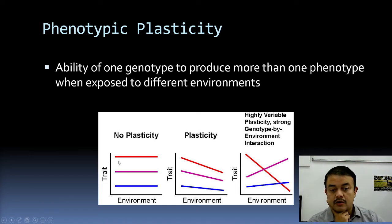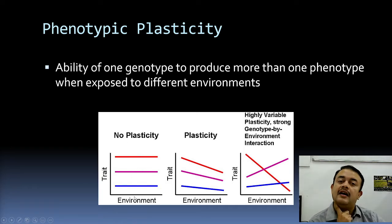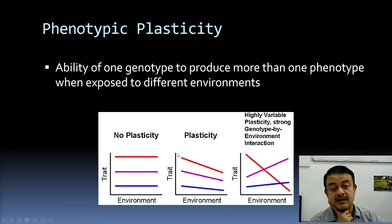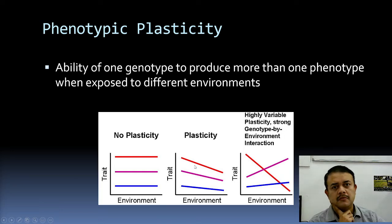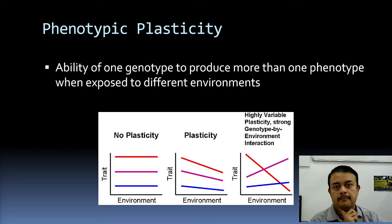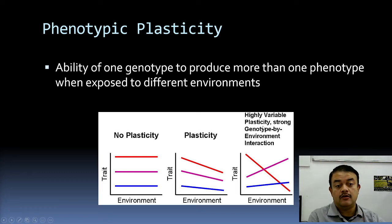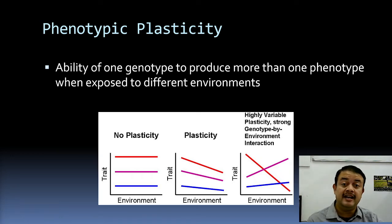If there is no plasticity, different genotypes in the same changing environment produce three distinct morphological forms. With a moderate level of plasticity, the same trait can have various values across environments — not drastic changes, but gradual differences like plant height varying along a gradient. That is called normal plasticity. But with highly variable plasticity, or strong genotype-by-environment interaction, a trait can show huge variation from one environment to another.